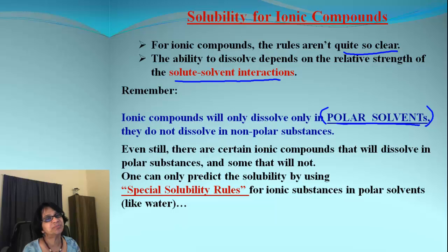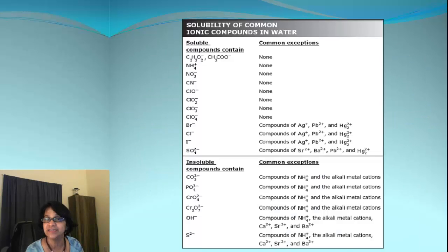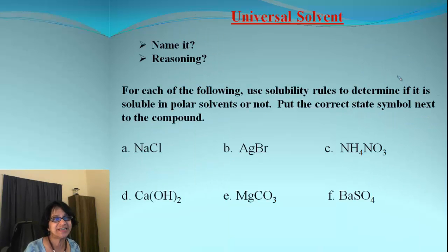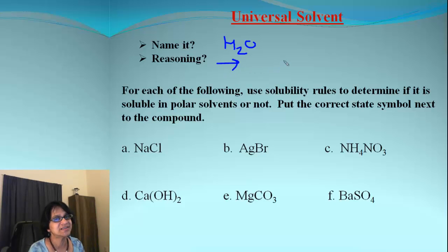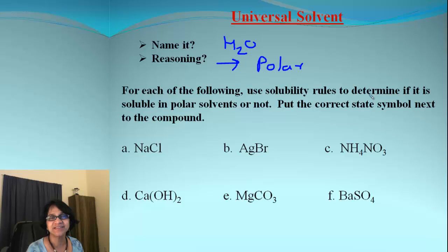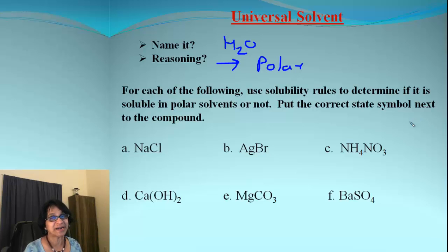We are going to predict solubility using a special solubility rules chart. The first thing is the universal solvent — it is simply water. Water is a polar solvent, and we already mentioned that water makes a very good solvent for ionic compounds.